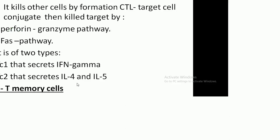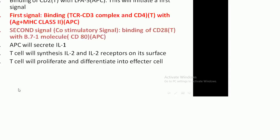T cytotoxic cells react to MHC class 1 molecules and close to the cell by formation of cytotoxic T cell-target cell conjugates. The mechanism involves the perforin-granzyme pathway and the Fas pathway, of two types: T cytotoxic 1 and T cytotoxic 2. Another type is the T memory cell, which is important in the cellular immune response.